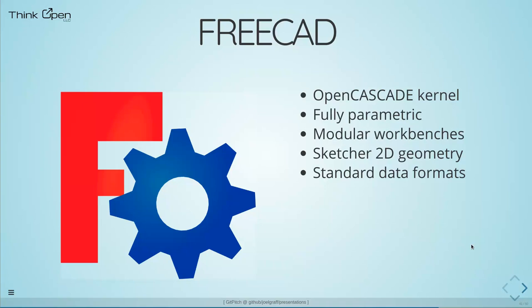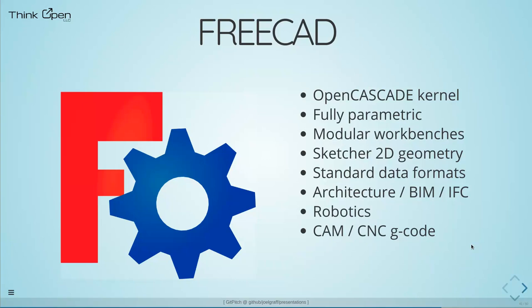FreeCAD has a sketcher, which is a 2D constrained geometry tool, and supports many standard open data formats. Formats like DWG or DGN are closed-source binary formats, so bringing that data in requires a third-party converter first. FreeCAD includes workbenches for architecture and BIM/IFC — developed by a practicing architect who is one of the core developers — as well as robotics, CAM/CNC path generation with G-code output, 2D sheet support through its TechDraw workbench, external 3D rendering support, and an integrated spreadsheet.